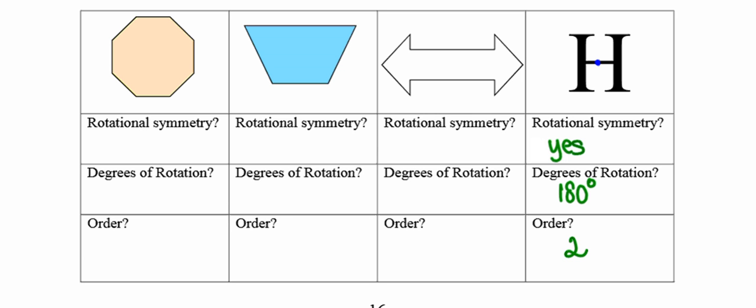The next one is the arrow. Like the letter H, if I turn it a complete 180 degrees, it appears exactly the same upside down as it did right side up. So like the letter H, I would conclude that it has rotational symmetry. It will require 180 degrees of rotation about the center point to map it onto itself. Because it appears exactly the same upside down as it does right side up, there are two positions in which it remains unchanged, making its order 2.